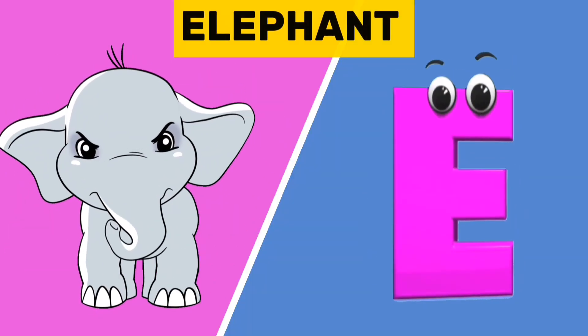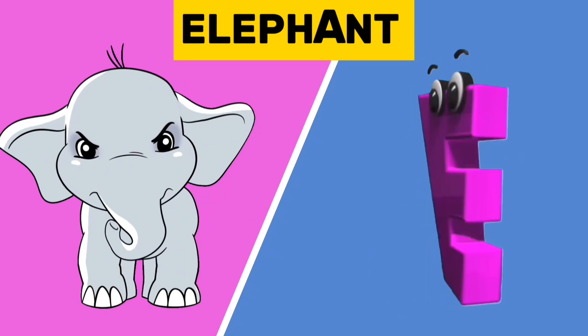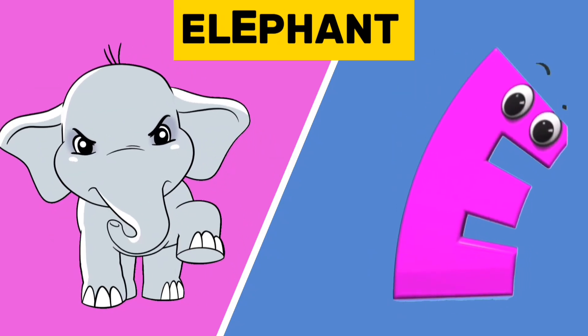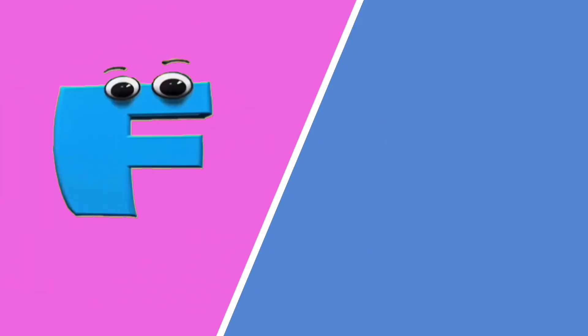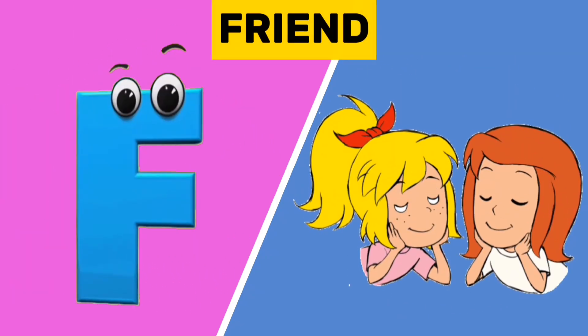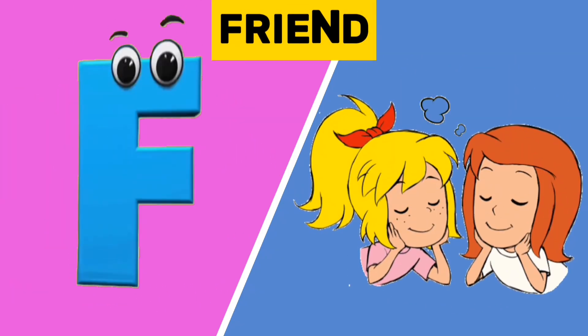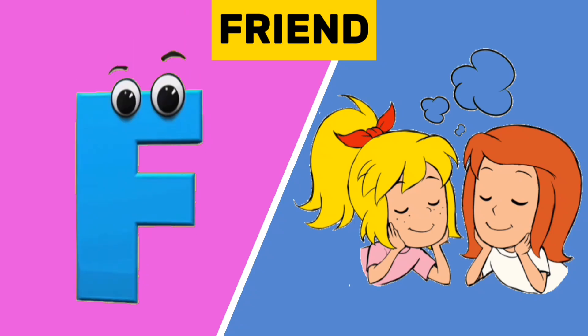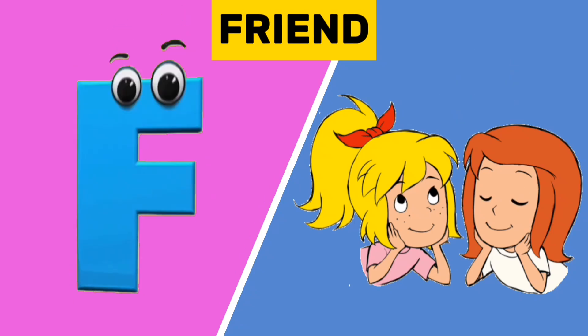E is for elephant. E, e. Elephant. F is for friend. F, f. Friend.